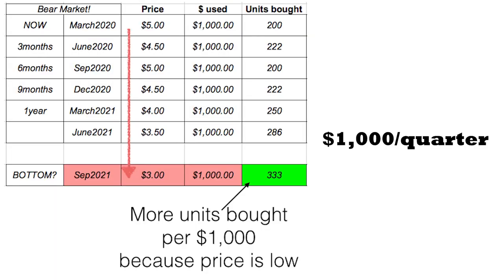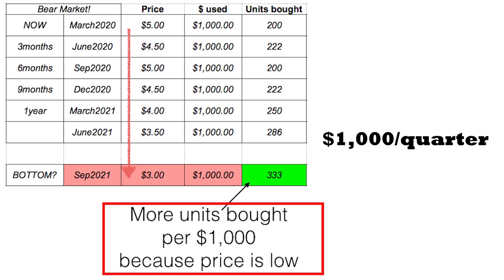Let's run through dollar cost averaging with a hypothetical example. Say you're looking to invest quarterly — a thousand dollars per quarter — starting March 2020. As you buy every quarter, prices may go down. Imagine we are already in a bear market and markets go down and down. What you realize is that per quarter you are getting more units for your one thousand dollars. This is the real effect of dollar cost averaging.